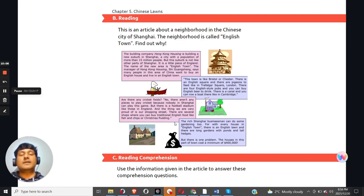Moving on, the rich Shanghai businessman can do some gardening too. So for with every house in English town, there's an English lawn, there are long gardens, ponds, and tall hedges. So they are trying to really create a replica of what you would get if you are in England. And this is what some Chinese people want. And according, again, to the businessman, who's the manager of the Hong Kong housing, he says many people want this. So it could be more than any of us think. Now, there is one problem. The houses in this part of the town cost a minimum of 400,000. So this is very, very expensive. Maybe not many people in China can afford this.